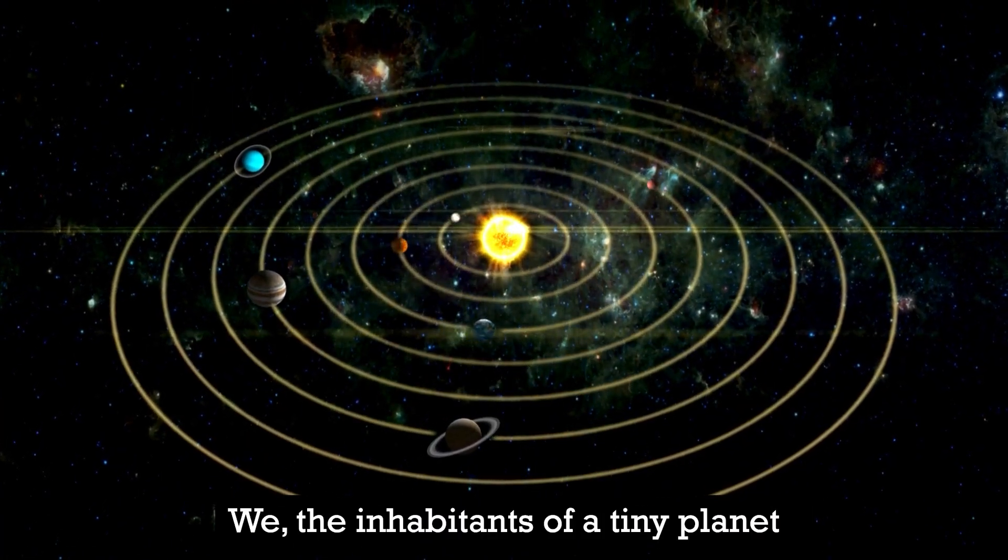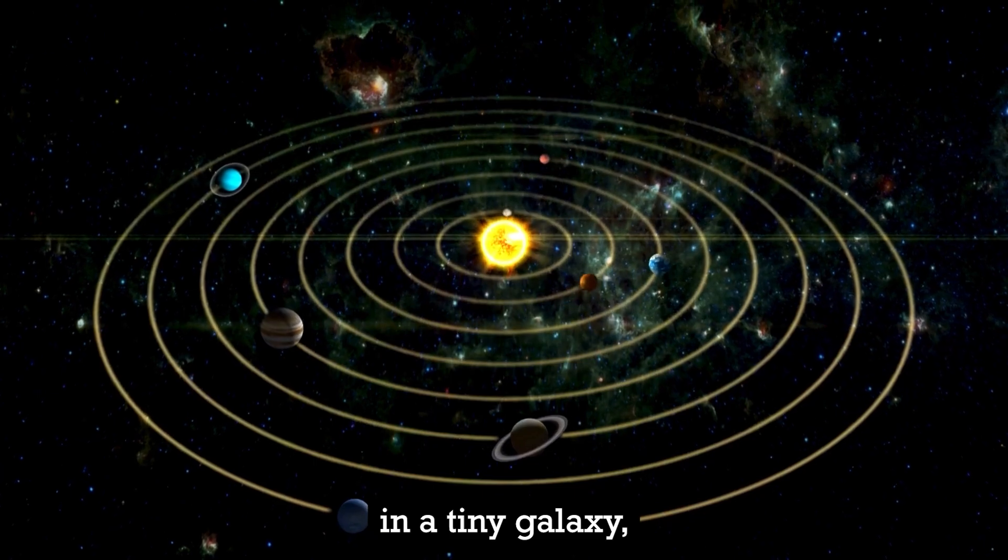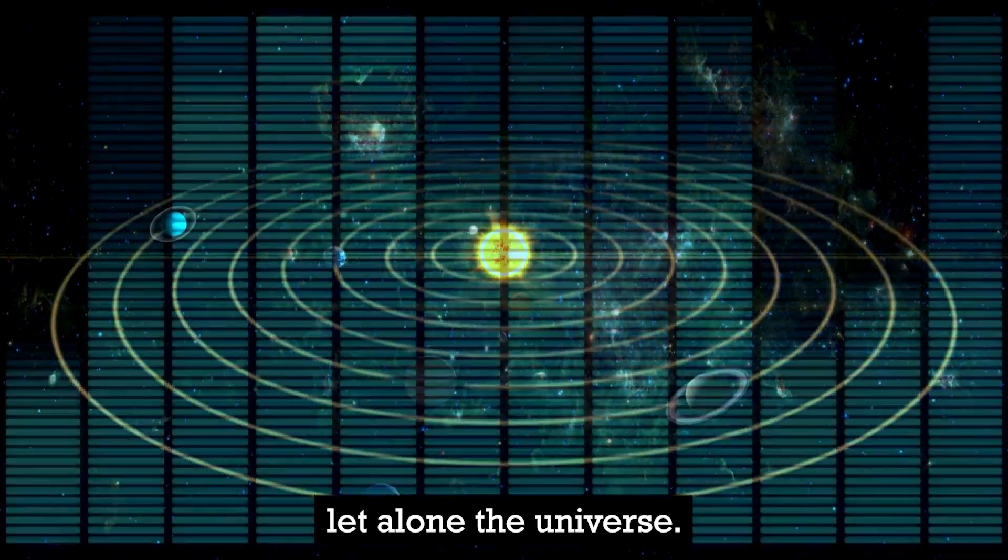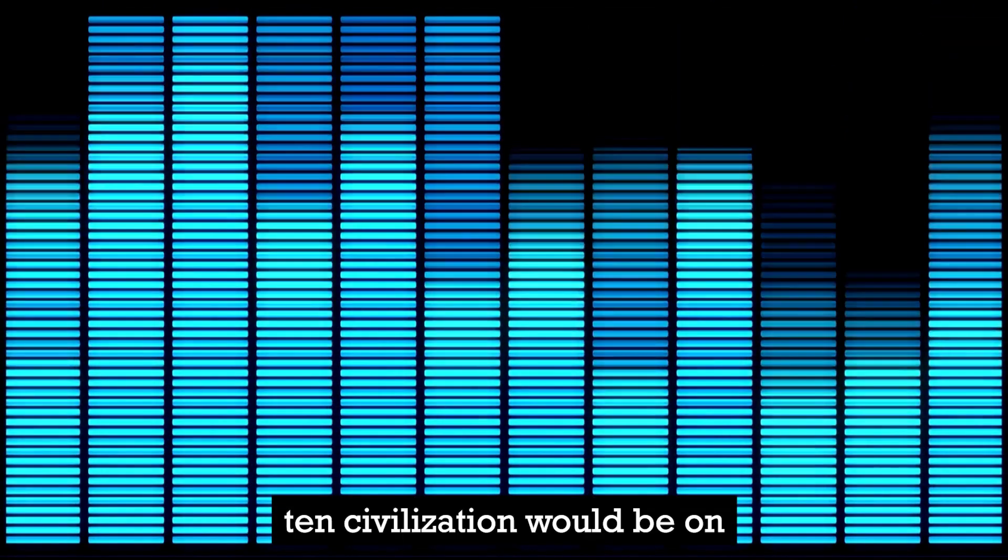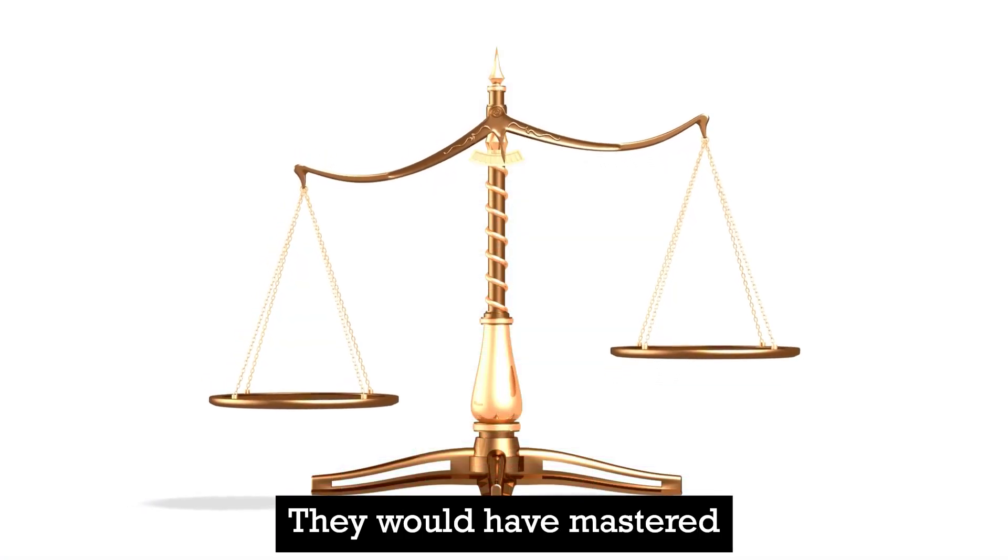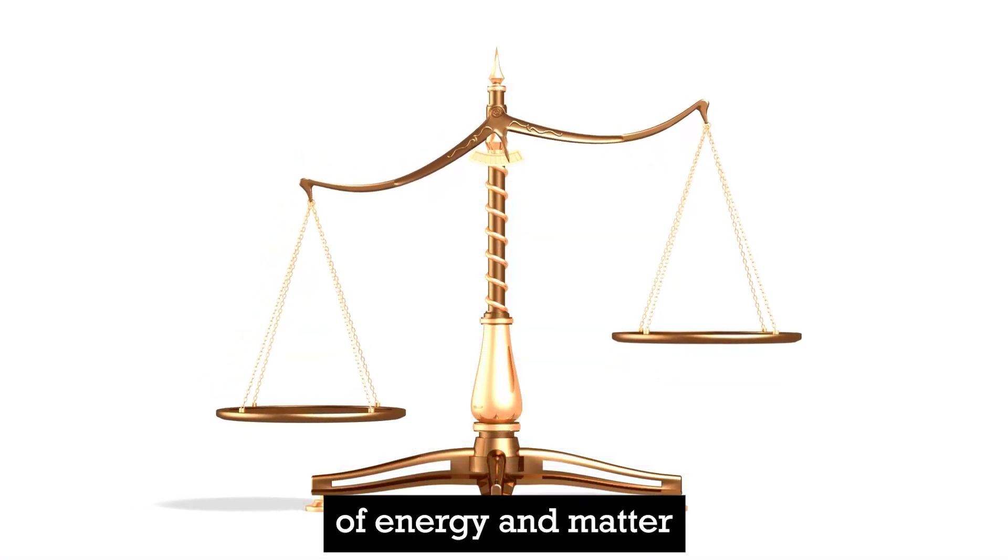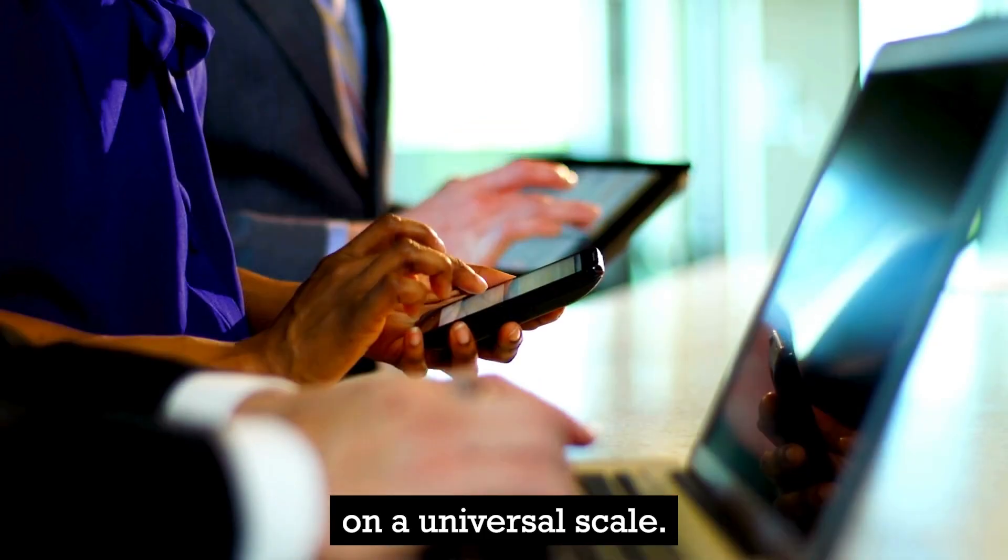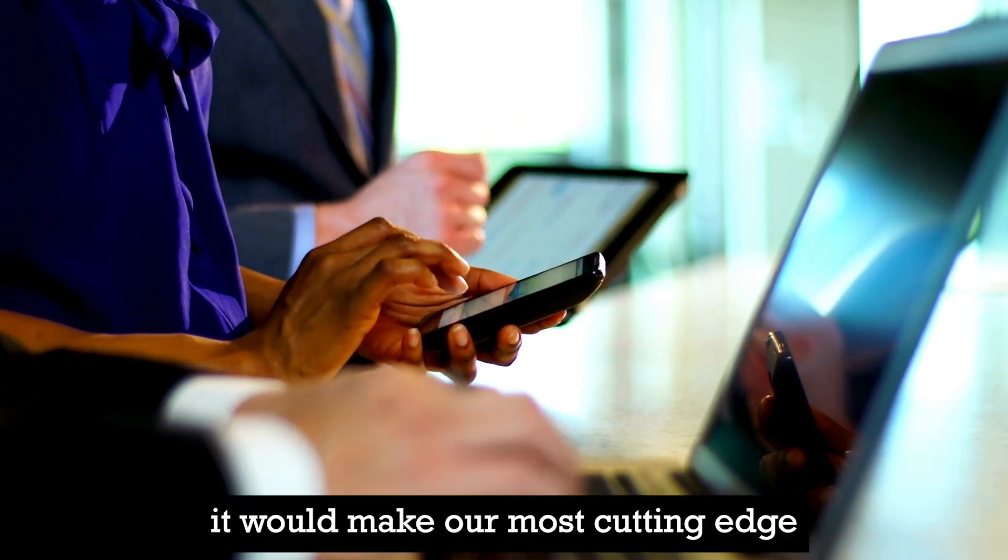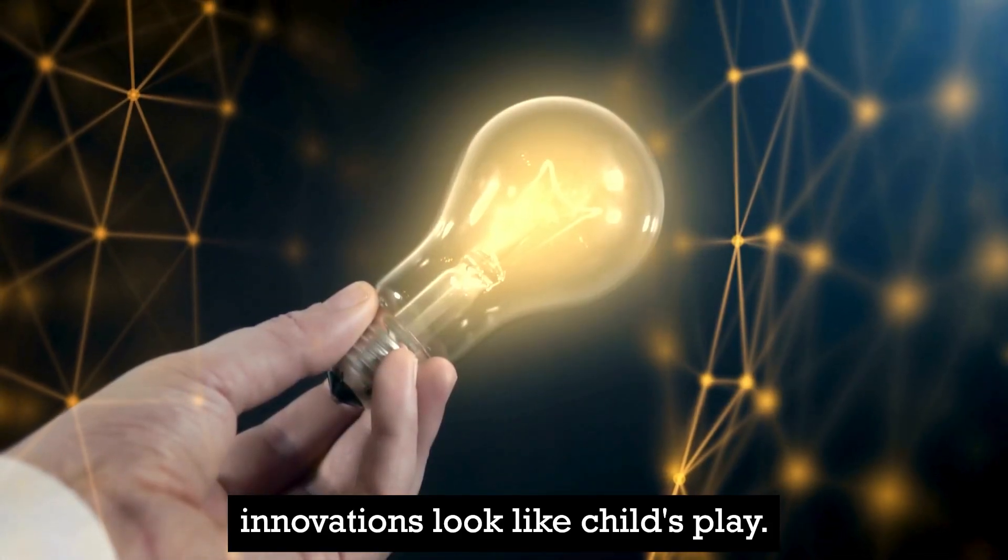We, the inhabitants of a tiny planet in a tiny galaxy, are still struggling to harness the energy of our own sun, let alone the universe. A Type 10 civilization would be on an entirely different level. They would have mastered the manipulation of energy and matter on a universal scale. The technology would be so advanced, so sophisticated, it would make our most cutting-edge innovations look like child's play.